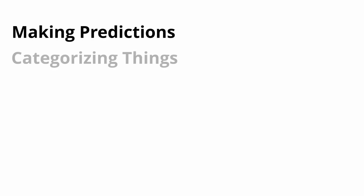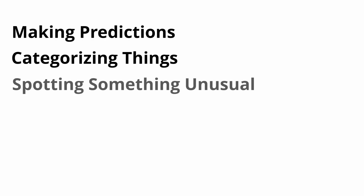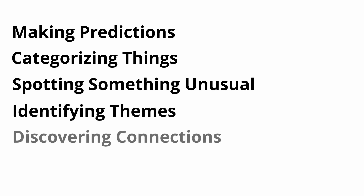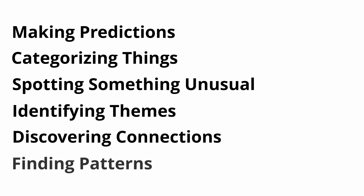Course two focuses on giving us more context on the first phase of data analysis, which is the ask phase. In the first week, we're introduced to six different problem types that data analysts try to solve: making predictions, categorizing things, spotting something unusual, identifying themes, discovering connections, and finding patterns.